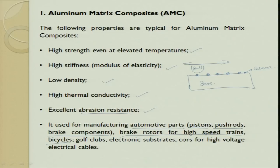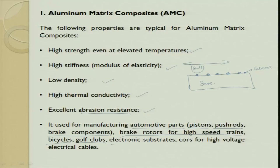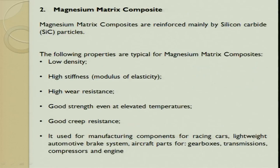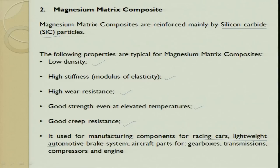Bicycles today are made from metal matrix composites — moving from steel frames to aluminum frames for weight reduction, then to carbon-carbon composites. Parts are made from aluminum metal matrix composite. Golf clubs and electronic substrates and cores of high voltage electrical cables are also made from it. Magnesium MMC are generally reinforced with SiC particles: low density, high stiffness, high wear resistance, good strength at elevated temperatures, and good creep resistance. Used in racing cars, automobile braking systems, aircraft gearboxes, transmissions, compressors, and engines.